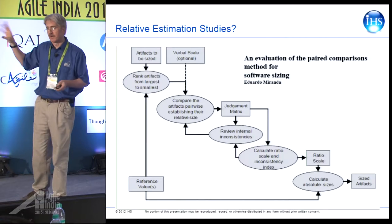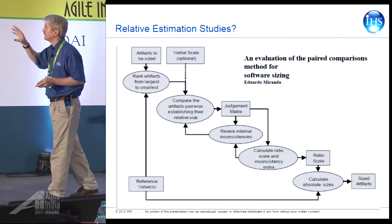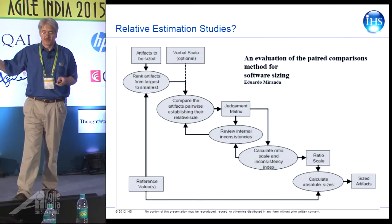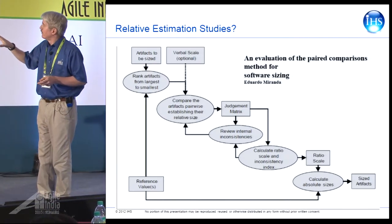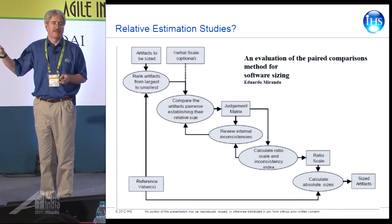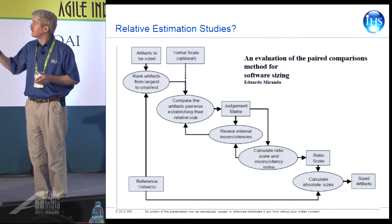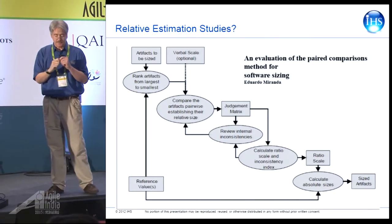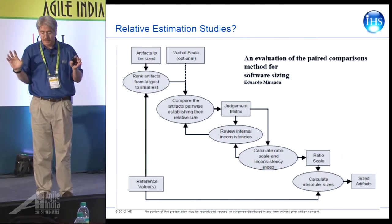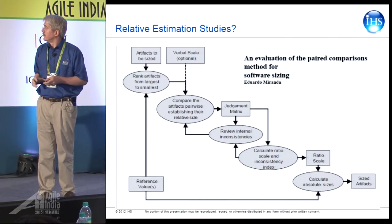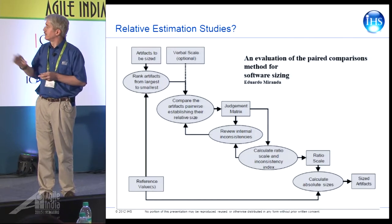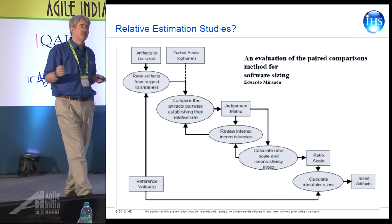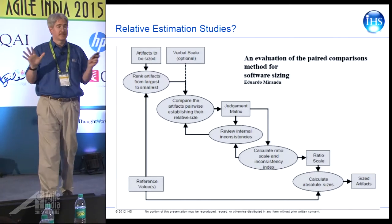The study often referenced by Agilists on relative estimation is an excellent piece of work by Eduardo Miranda — but it looks absolutely nothing like any of the relative estimation approaches that we use. It's actually a very complicated pairwise estimation process that goes through moderately complicated mathematics, much more complicated than I would see in any Agile team. Most Agile teams are taking an approach of doing it simpler and simpler — which is not necessarily a bad thing.